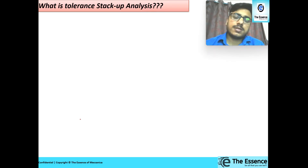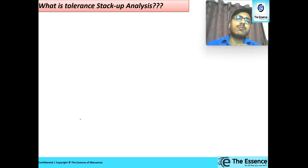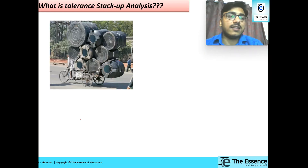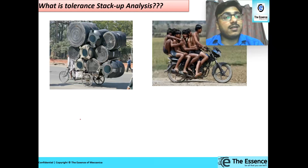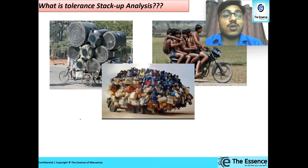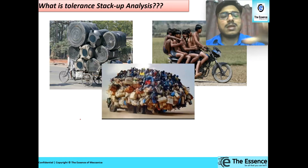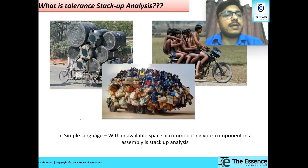Tolerance stackup analysis is stacking the components within available space. All the components in an assembly should fit in as required, and thickness should be sufficient. Looking at these images — like a bike with six or seven people where there was no space but it still got accommodated — stackup analysis is knowing whether you are able to fit all the components within the available space. That, in simple language, is what tolerance stackup analysis is.